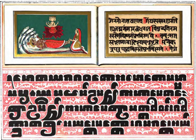Pali, also called Magadhan, is a Middle Indo-Aryan language native to the Indian subcontinent. It is widely studied because it is the language of the Pali Canon or Tipitaka, and is the sacred language of some religious texts of Hinduism and all texts of Theravada Buddhism. The earliest archaeological evidence of the existence of canonical Pali comes from Pyu city-states inscriptions found in Burma, dated to the mid-5th to mid-6th century CE.